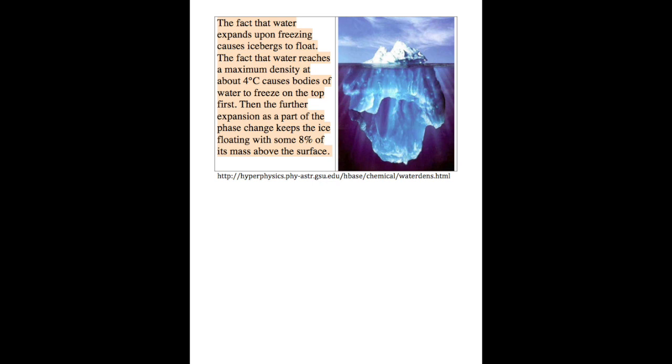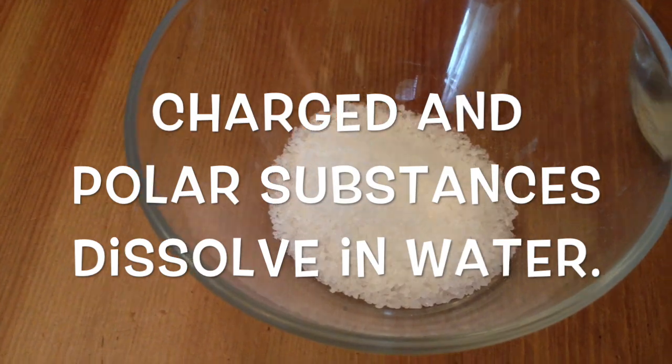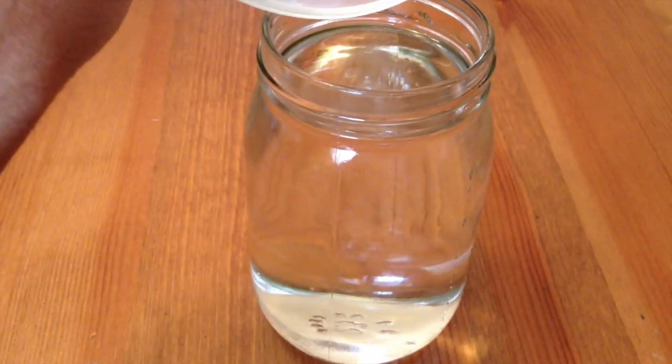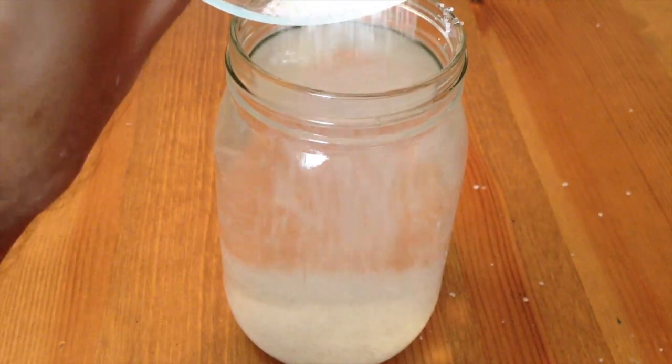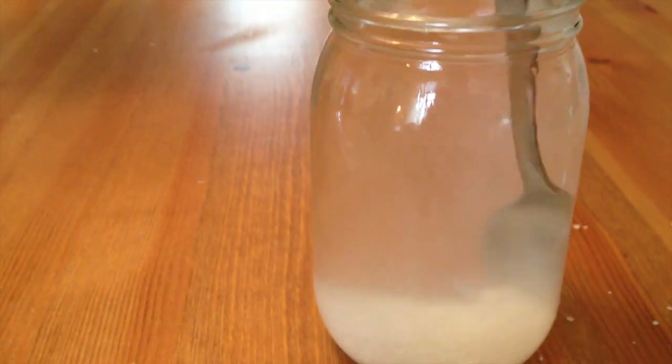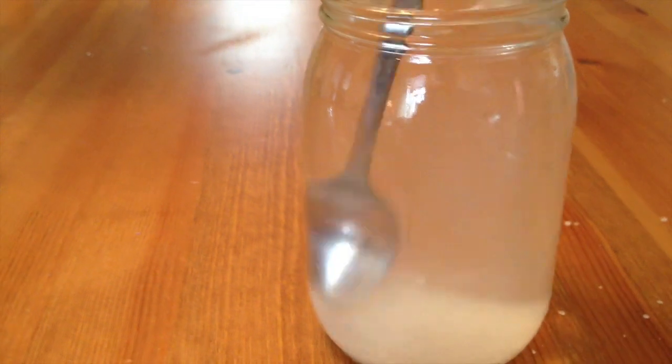Finally, the incredible polarity of water causes ions and other polar molecules to dissolve in it. Watch as this ionic compound called sodium chloride or salt dissolves. How can even these large crystals disappear in water?